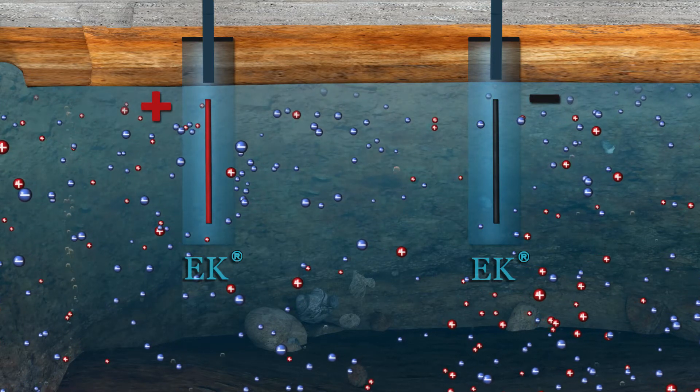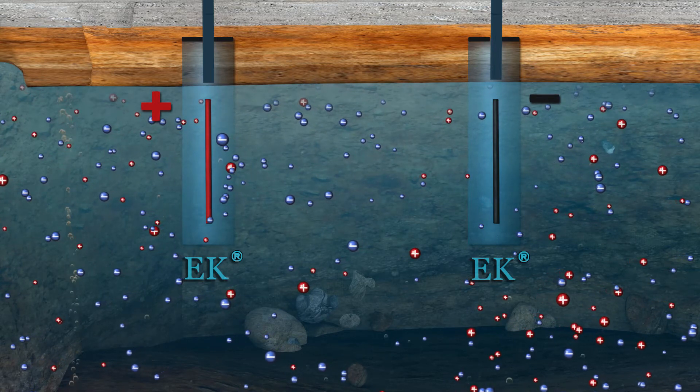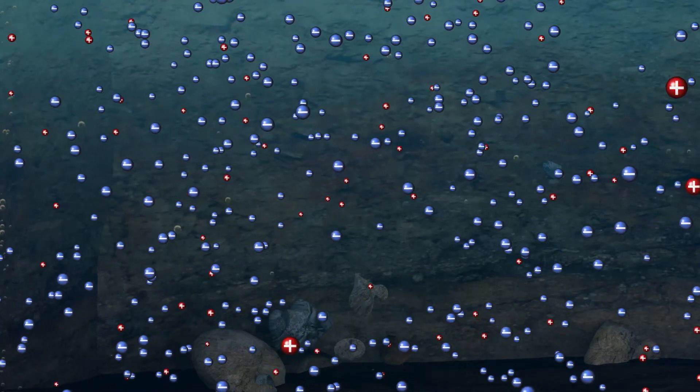Electrokinetic remediation processes have a number of attractive features, including the ability to control the movement of charged and non-charged anionic and cationic species.